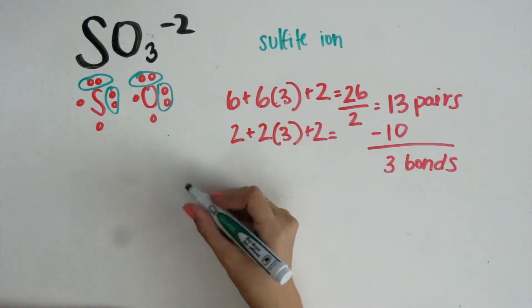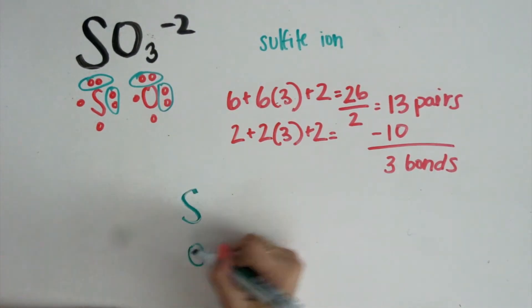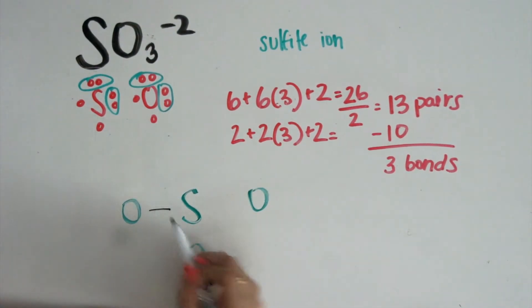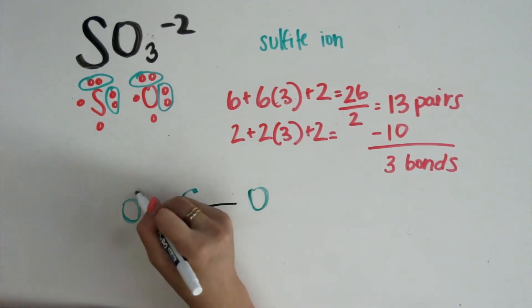With sulfur in the middle, we have our oxygen atoms around it. To satisfy these atoms and follow the rules of octet, we have our 3 bonds. Here are the lone pairs.